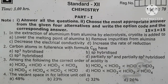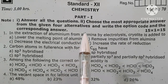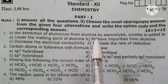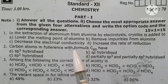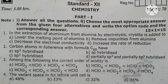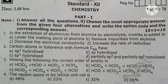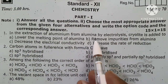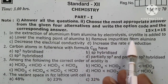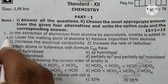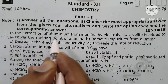Good morning, all of you. This is the 12th chemistry quarterly exam model question review. We will see question number 1: In the extraction of aluminium from alumina by electrolysis, cryolite is added to lower the melting point of aluminium.